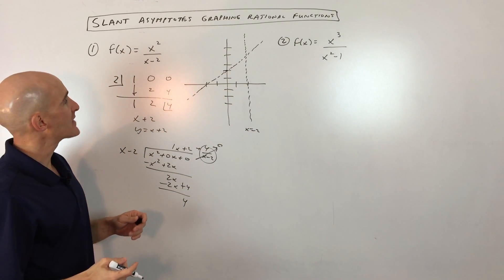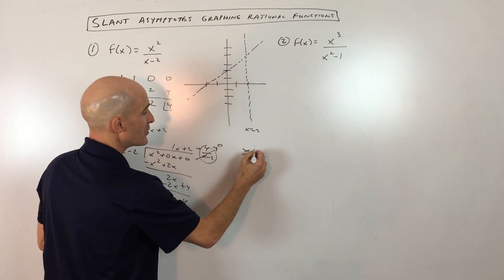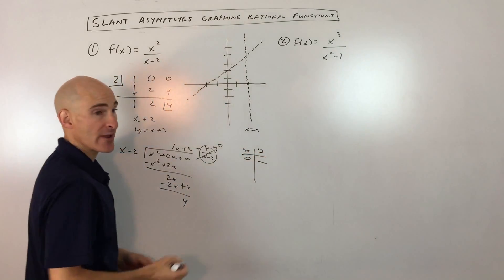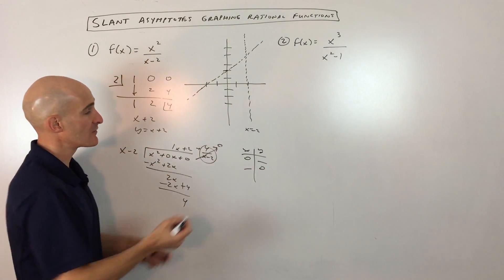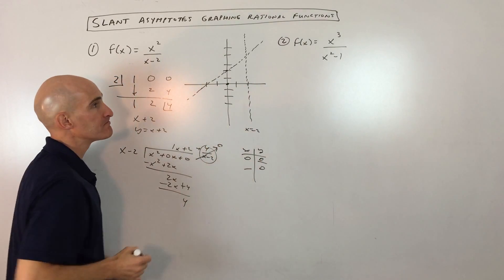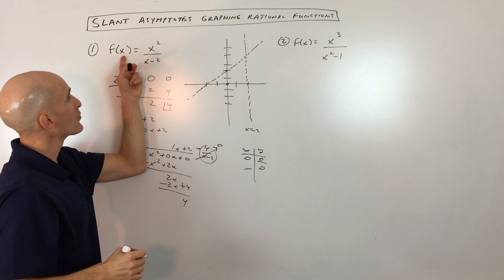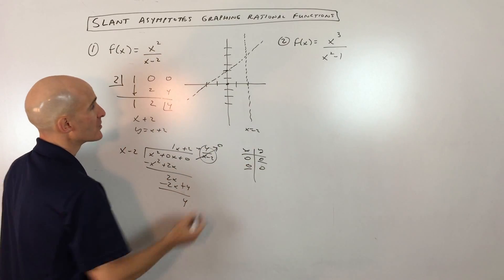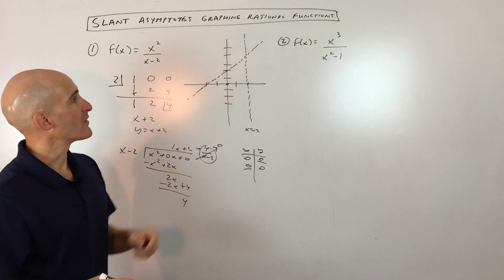Let's look at the x-intercepts and the y-intercepts. You can make a table like this, and you can set x to 0 to find the y-intercept and y to 0 to find the x-intercept. If we set x to 0, you can see we're going to get 0 over negative 2, which is 0. And so it's going to cross right here at the origin. If we set y to 0, again, we're going to get 0. So it's going through the origin. The x-intercept, the y-intercept, it's going through that same point there.